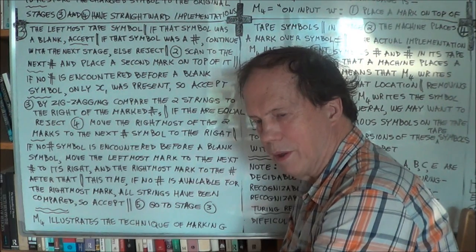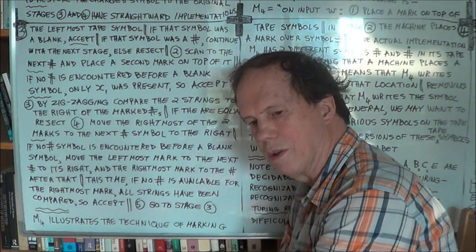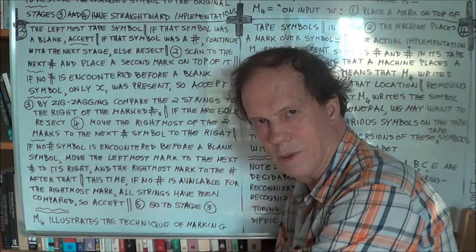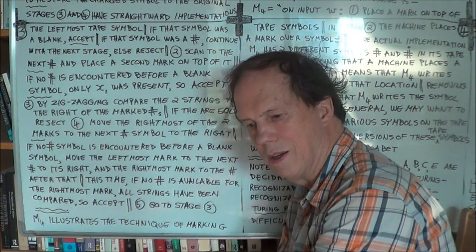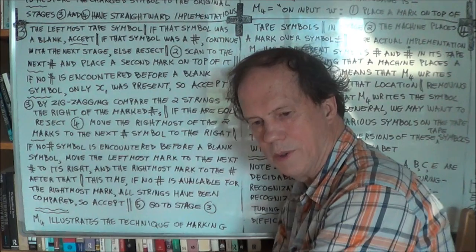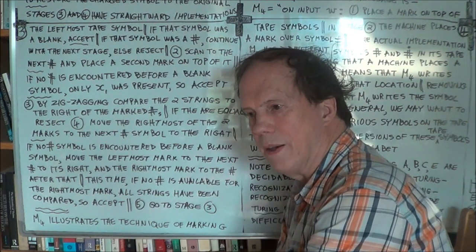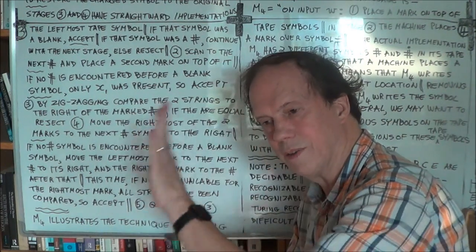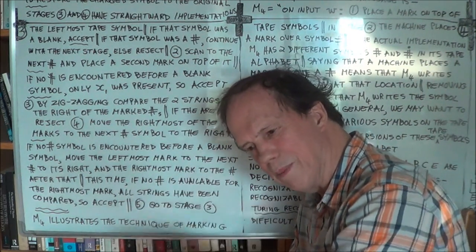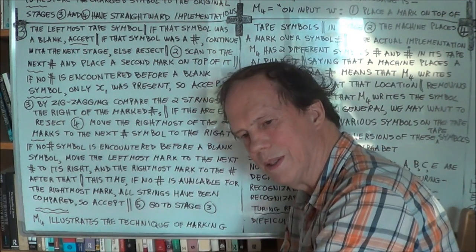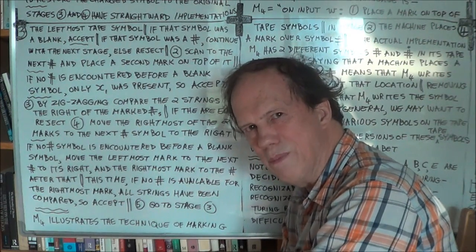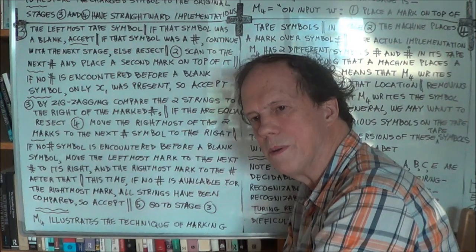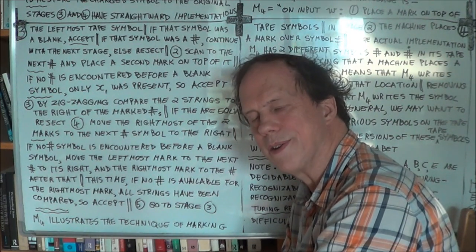We talked a little bit before about the global strategy: you look at the first string and compare it with the second, third, fourth, and so on, and then you look at the second string and compare it with the third, fourth, fifth, and so on. That's the global strategy — it's high level. Now we come down a bit and start thinking about how to implement that. It's top-down design.